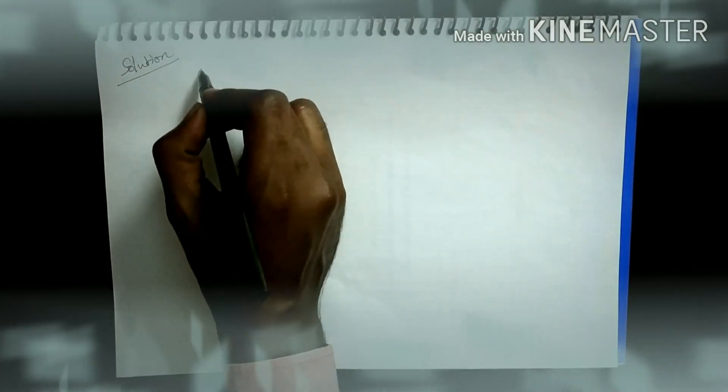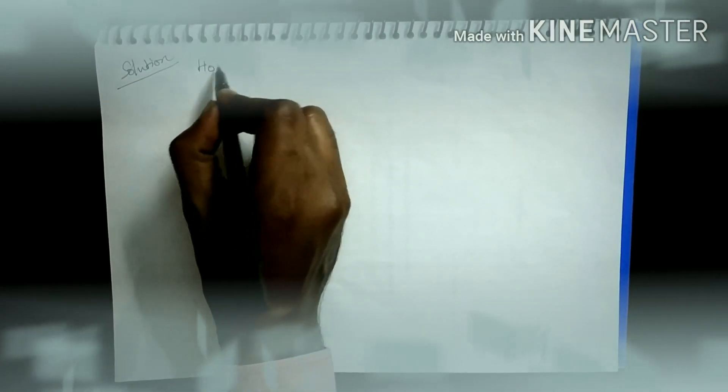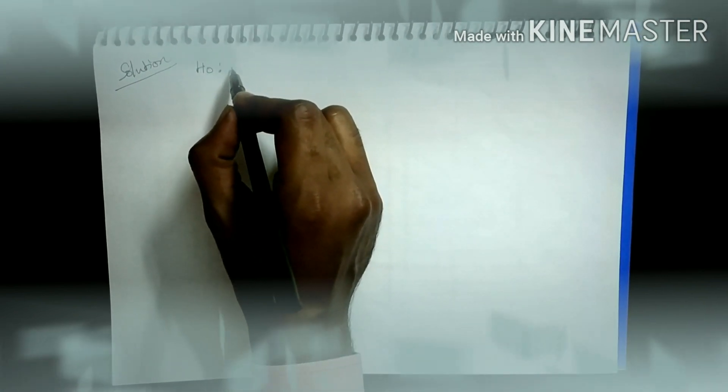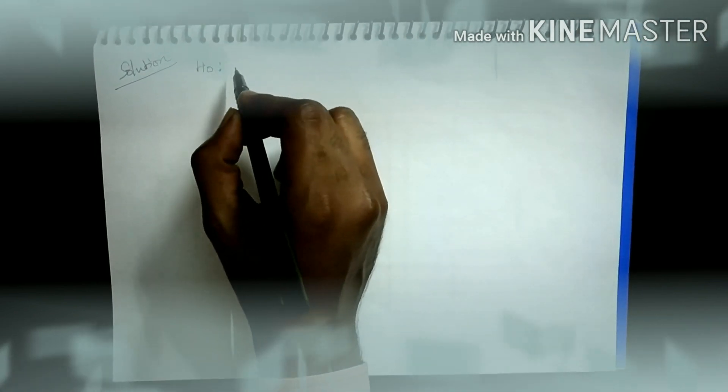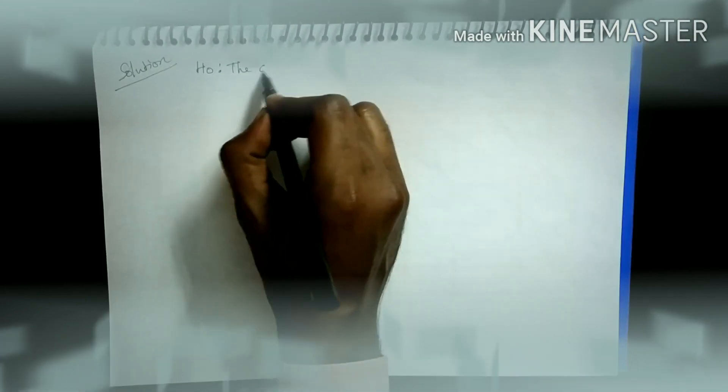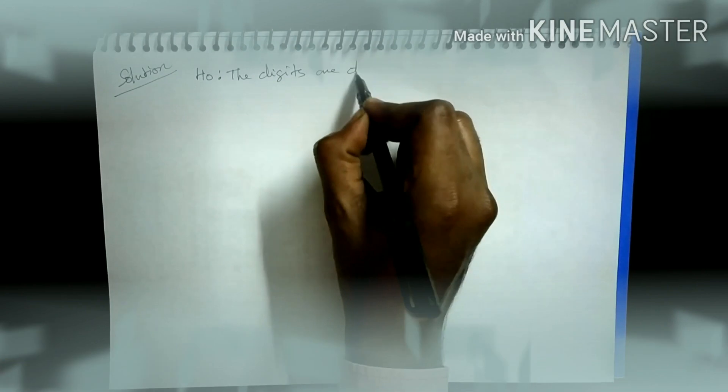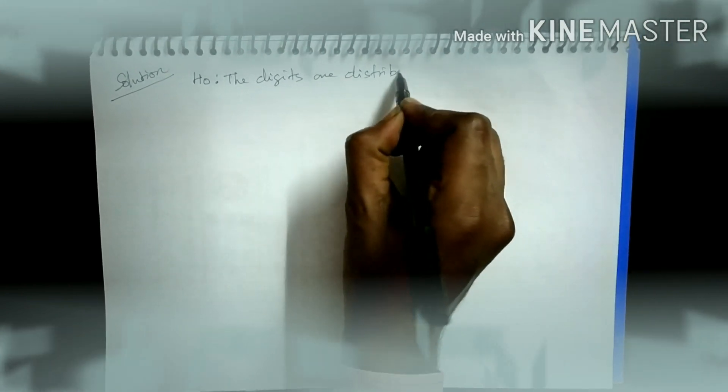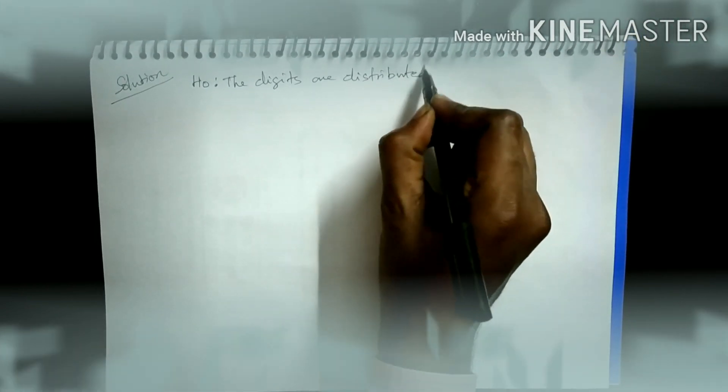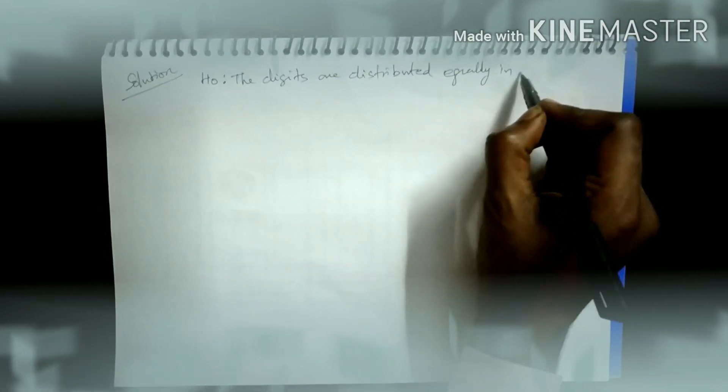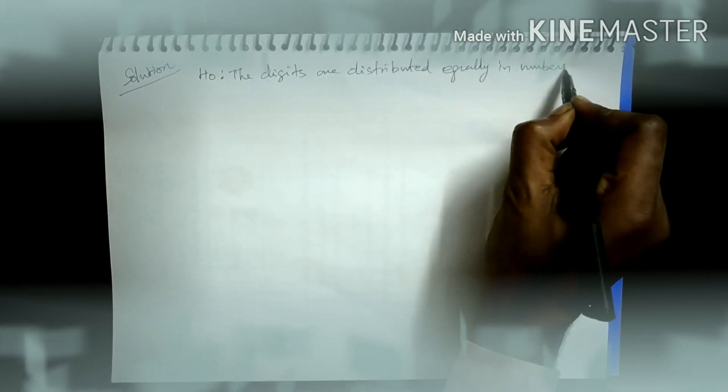The solution is, first of all, we have to fix the null hypothesis. Null means no difference. That means, we have to say, the digits are distributed equally in numbers. There is no difference.